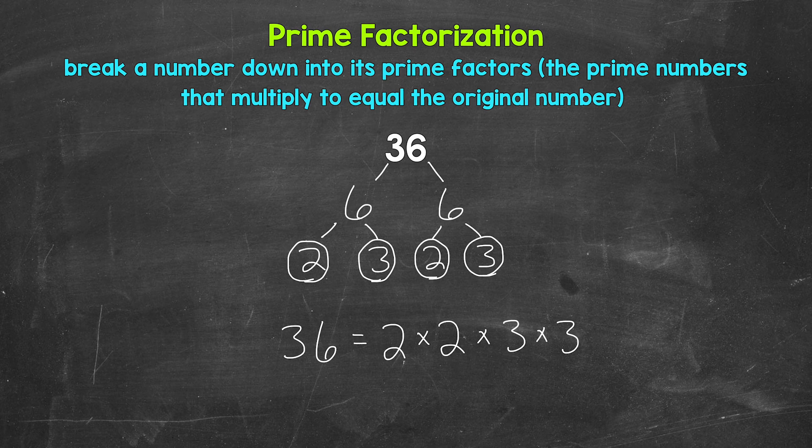And if we have the correct prime numbers, they will multiply to equal our original number. Let's check. 2 times 2 is 4. Times 3 is 12. Times 3 is 36. So we are correct here.